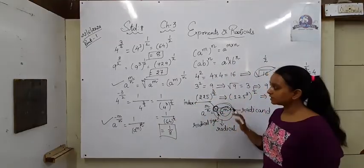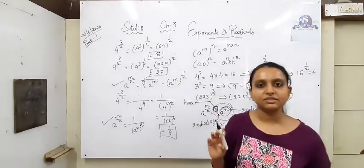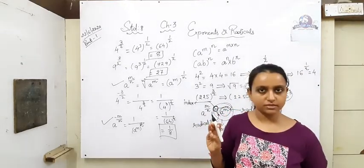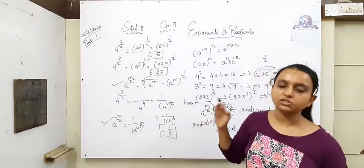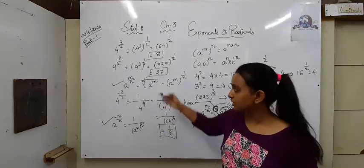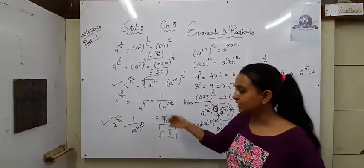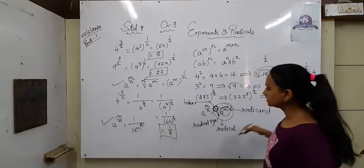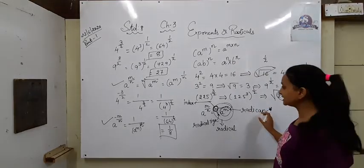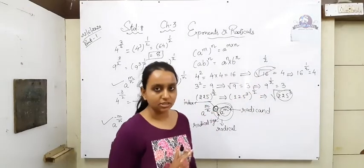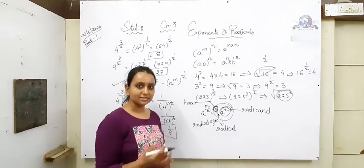So here you are clear with these concepts, I hope. We have discussed: first, the laws of exponents; then, what happens for positive rational numbers as exponents; and for negative rational numbers as exponents — whether the power is positive or negative, what happens. And then there is the concept of radical — what is the meaning of radical, what is the index, what is the radical sign. Now let's move to our exercises.